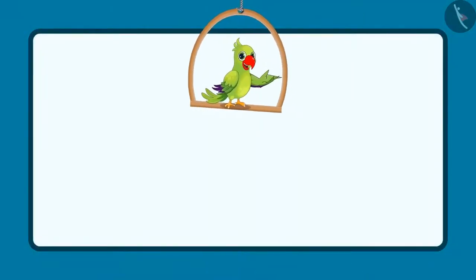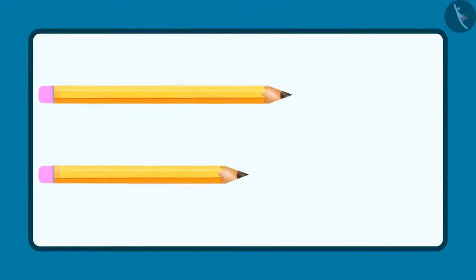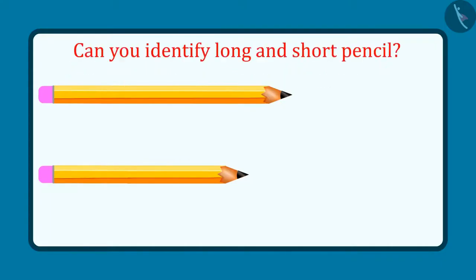So kids, can you also identify the long object and the short object out of two objects? Come, let's see. These are two pencils. Now tell me, out of these two, which one is the long pencil and which one is the short pencil?